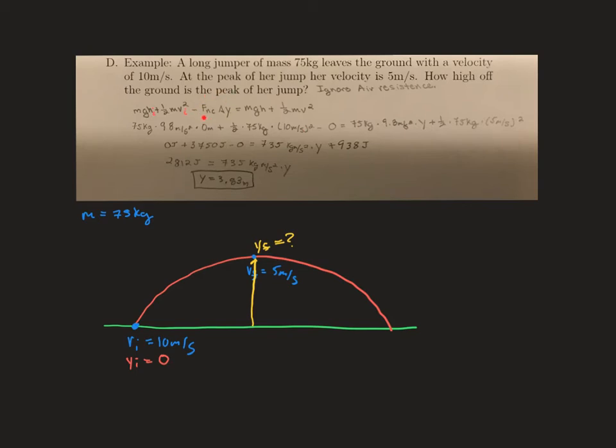Then we need to deal with our work non-conservative. So work non-conservative is force times the distance over which that force is applied. But it says up here in the problem we're supposed to ignore air resistance. So our force non-conservative, and thus, because anything times 0 is 0, our work non-conservative is going to be 0. So it takes care of the left-hand side of the equation.